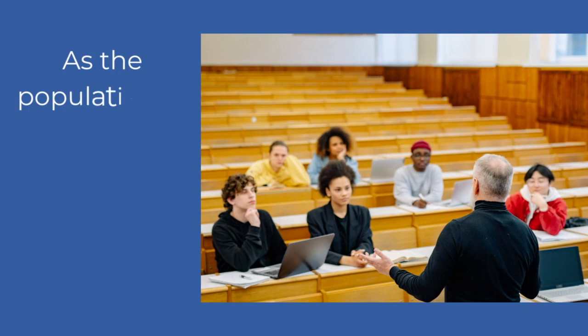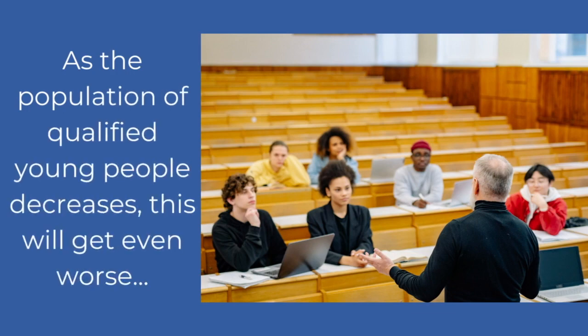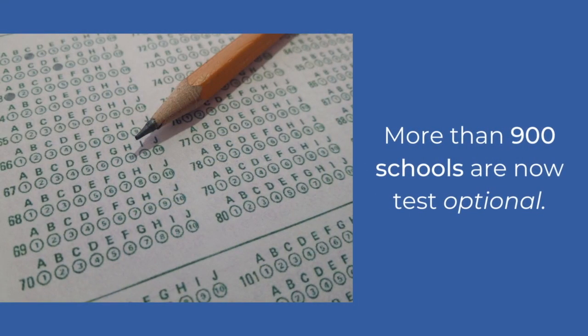Today, the proliferation of universities that occurred mostly in the 20th century means that the majority of US colleges now admit most students who apply. As the population of qualified young people decreases — because we are in an era of demographic decline — this will get even worse. The tools we use to determine college readiness have also been stripped of their meaning, which means that the decision-making process of who to admit has gotten even harder. Many schools have dropped the SAT or the ACT — more than 900 universities are now test optional, which includes the entire California state system, the largest four-year university system in the United States.